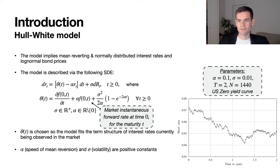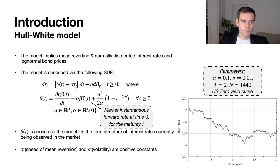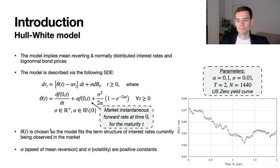The Hull-White model implies a mean-reverting and normally distributed assumption on the interest rates, giving log-normal bond prices as a consequence. The stochastic differential equation is: d r(t) equals a drift term plus some Brownian motion. The drift term has two components: first, theta of t, which is a function of time chosen explicitly so that the model fits the term structure observed in the market right now. This allows calibration to current term structures and extrapolation of future term structures based on current market data.